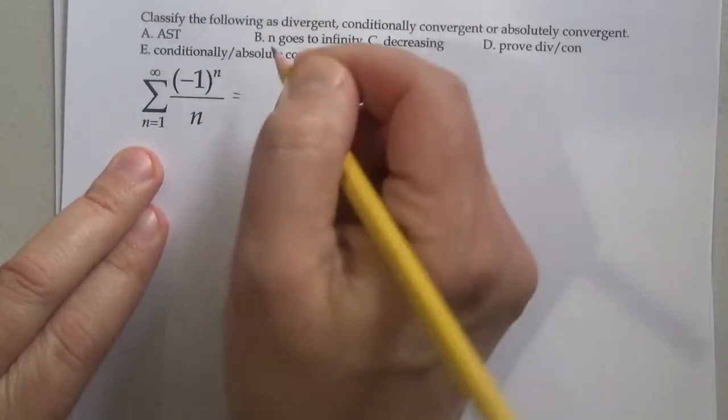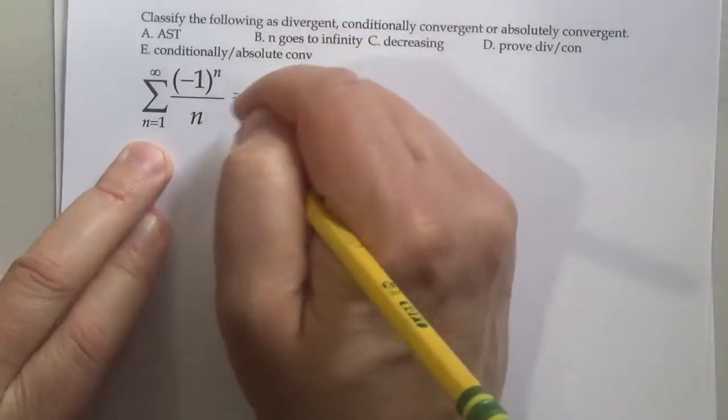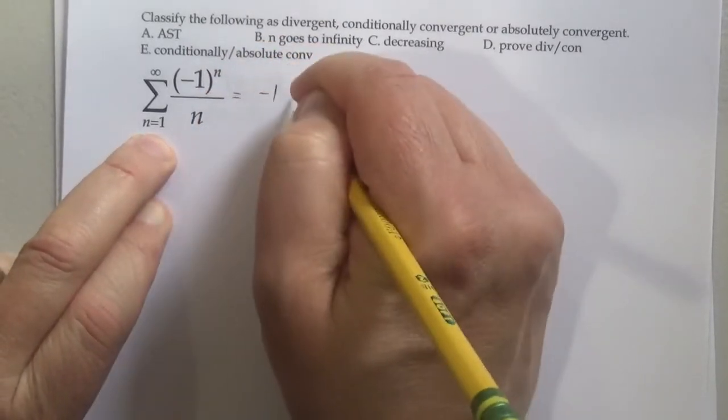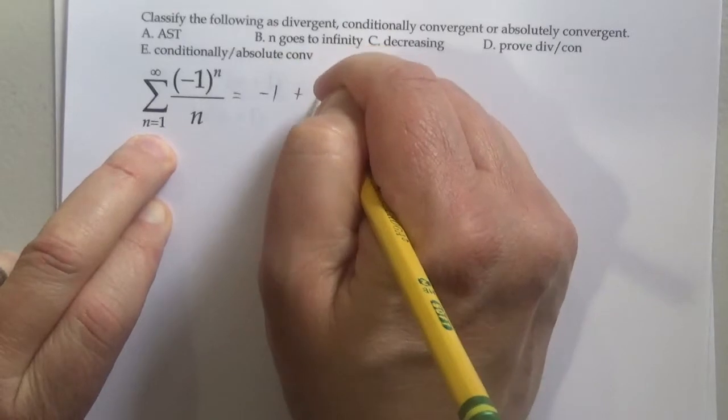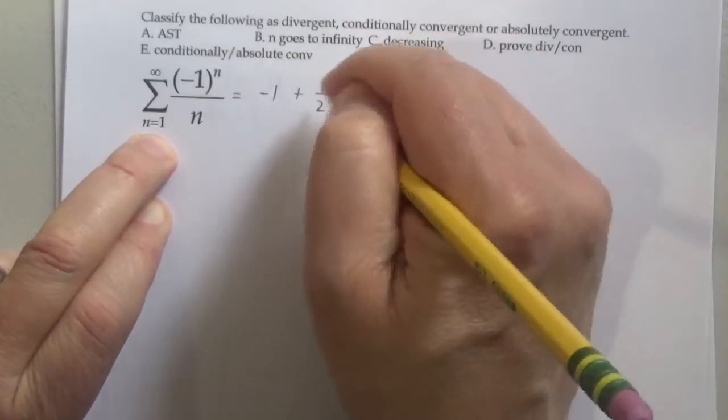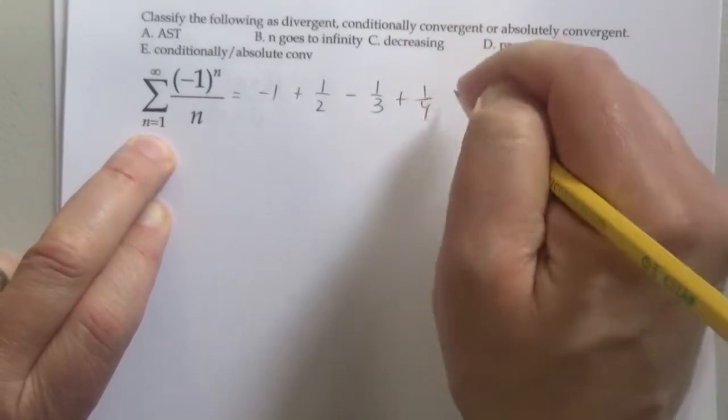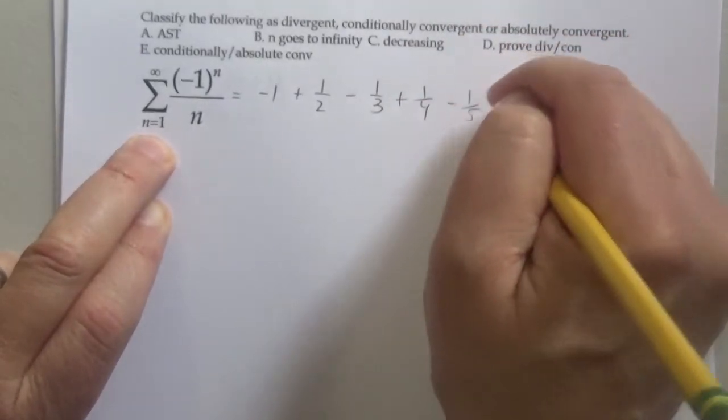Let's look at why this is alternating. Just plug in 1: I get negative 1 to the 1 over 1, which is negative 1. Plug in 2: my numerator is positive, my denominator is 2. Plug in 3: I get negative 1 over 3, then a quarter minus a fifth.